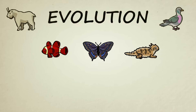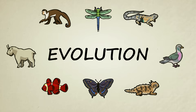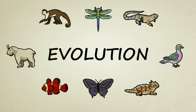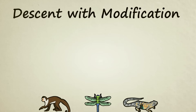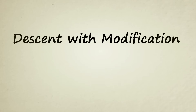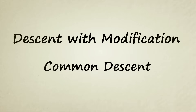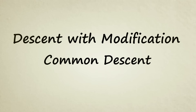Natural selection is one of several key concepts contained within the theory of evolution. To understand exactly what natural selection is and why it's so important, let's first take a quick look at two other evolutionary concepts: descent with modification and the overarching idea of common descent.